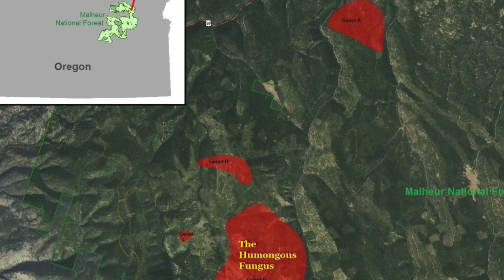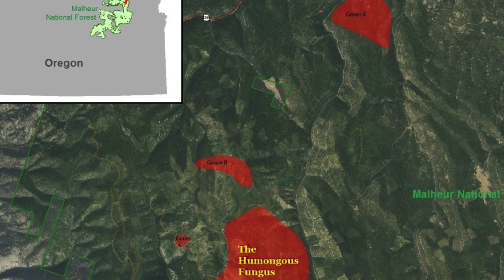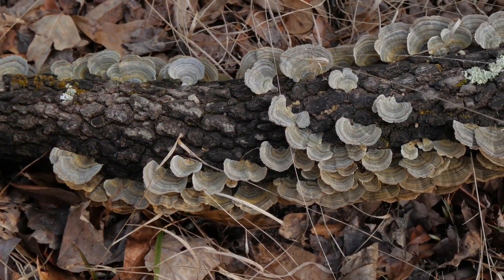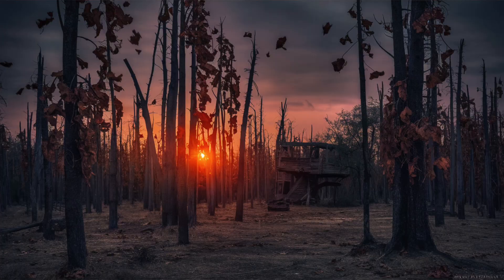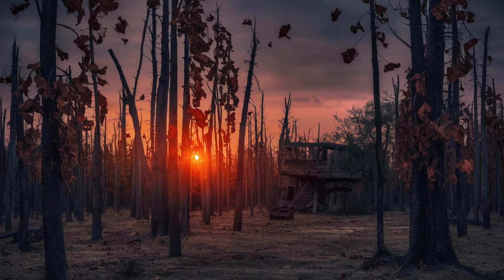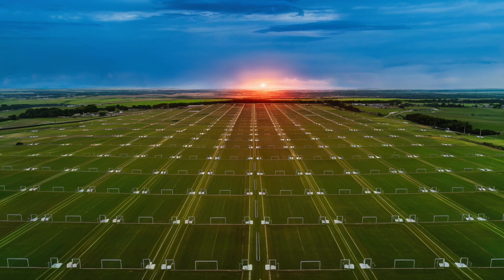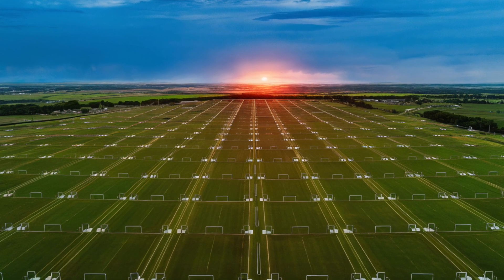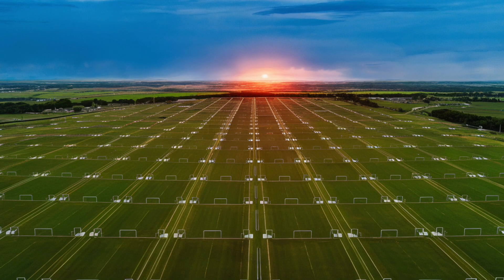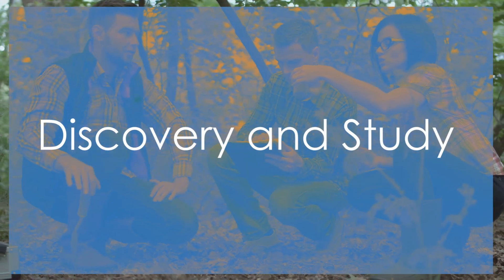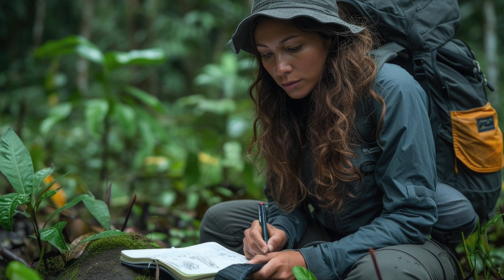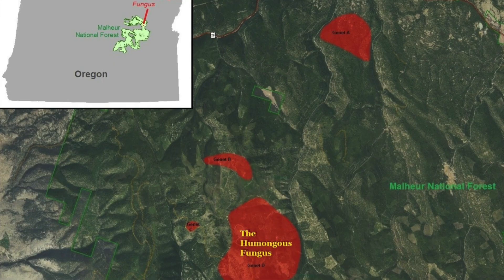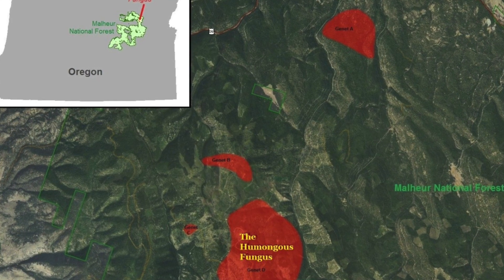Some estimates suggest it could be as old as 8,650 years. This immense network of mycelium spreads through the soil, infiltrating the root systems of trees and other vegetation, drawing nutrients from them, and in the process, slowly killing its host plants. To put its size into perspective, this single organism spans an area equivalent to over 1,665 football fields, making it the largest known living organism by area. The enormity of the organism was first recognized in the late 1990s, when scientists noticed a significant die-off of trees in the Malheur National Forest. Upon further investigation, they discovered that the same genetic individual was responsible for the widespread root rot.